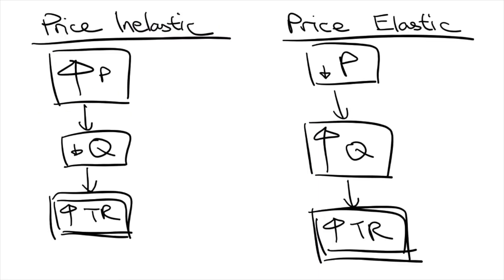To sum it up if total revenue moves in the same direction to a change in price it's price inelastic. If it moves in the opposite direction it's price elastic. Total revenue remaining constant means that it's unit elastic. The way I remember this is that inelastic is when they move in the same direction.